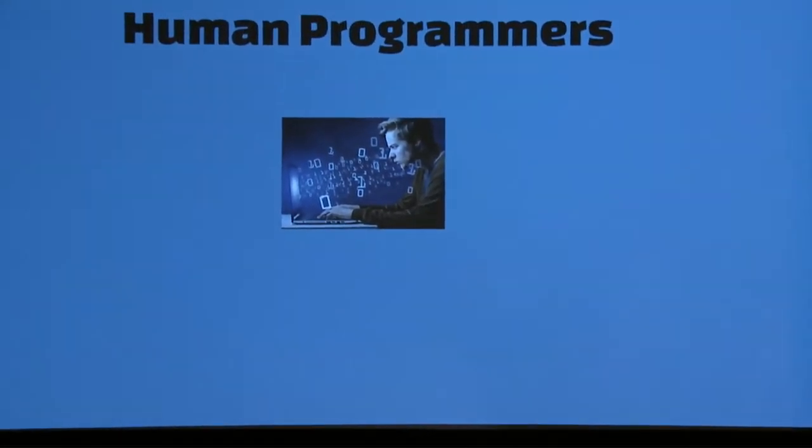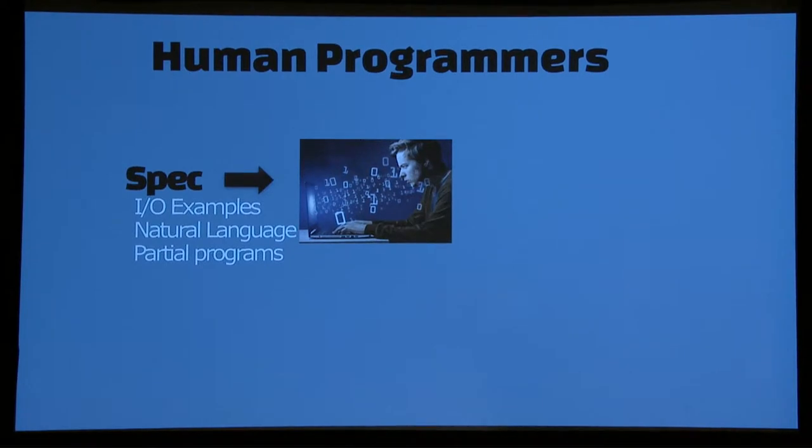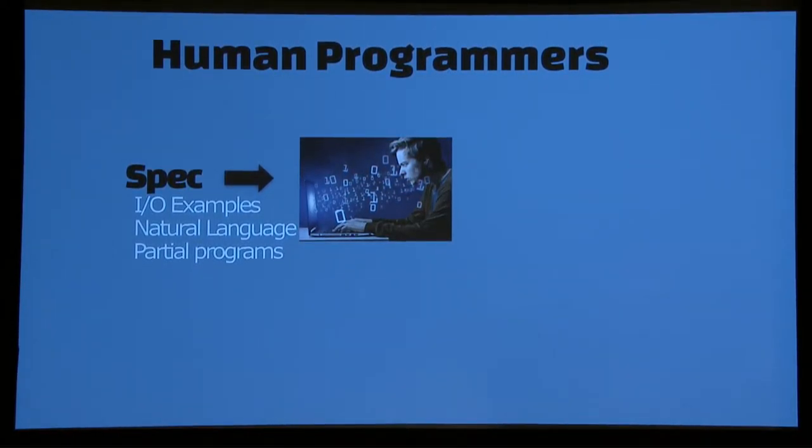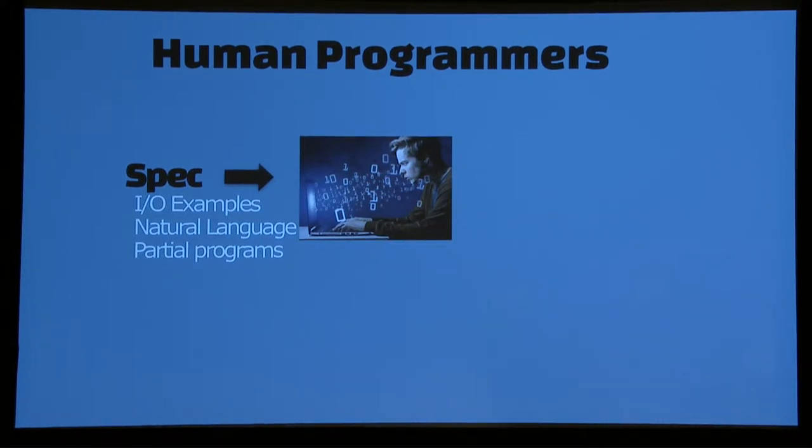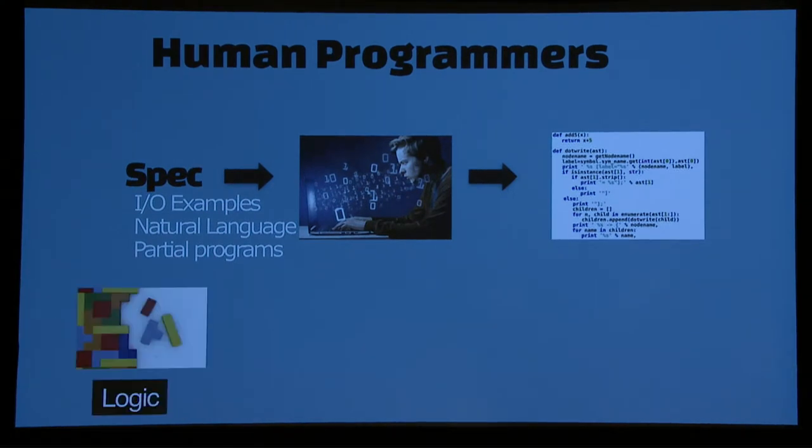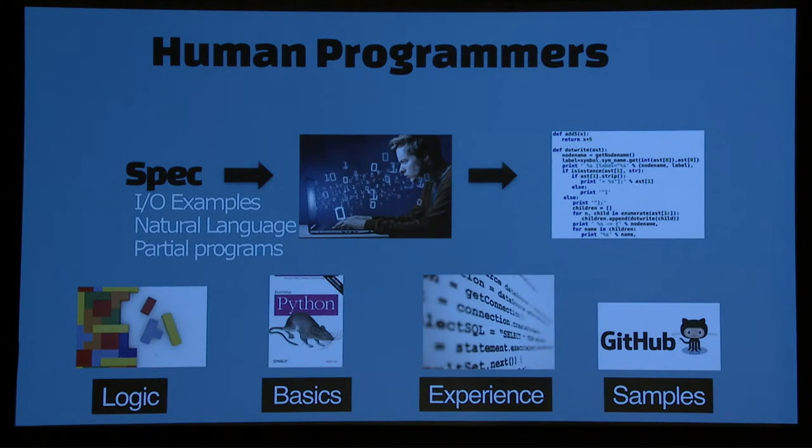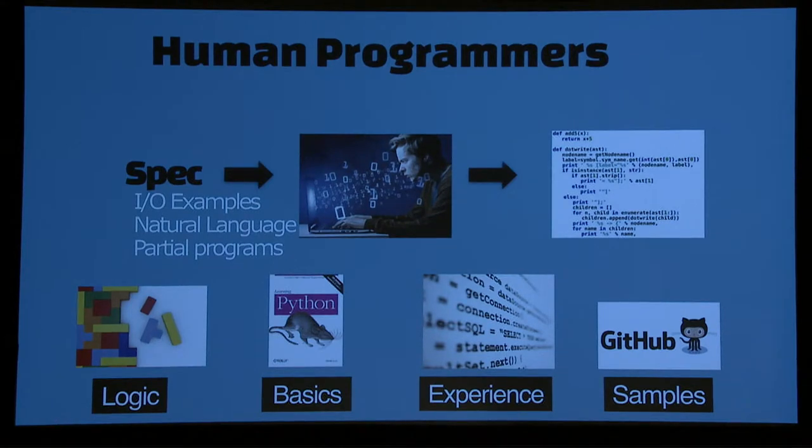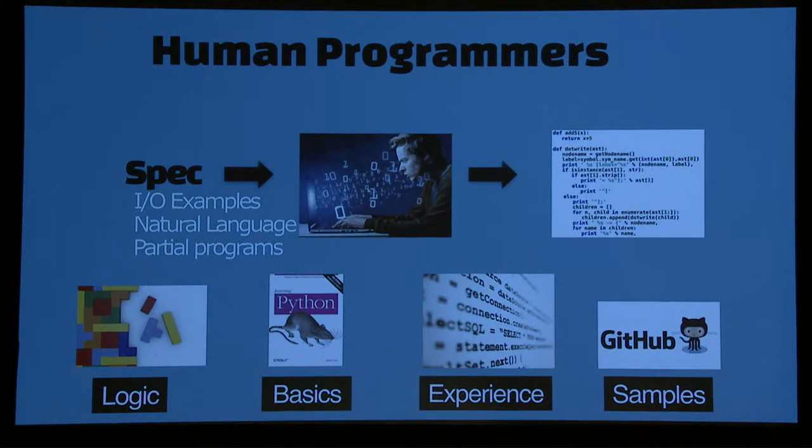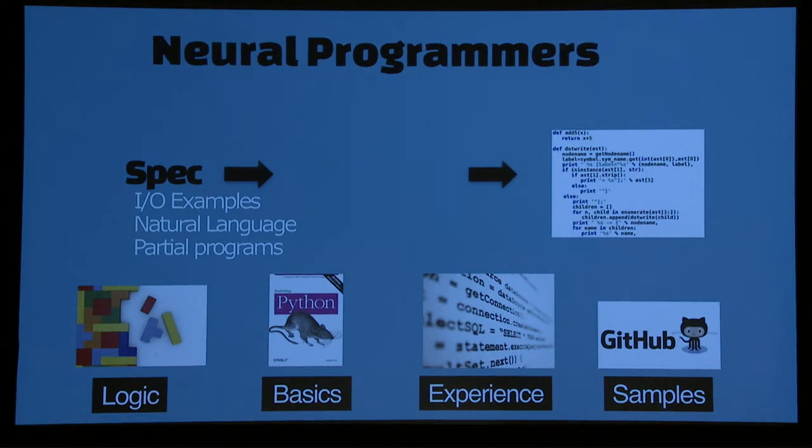If we take a step back and think about how humans are able to write programs, it's actually quite interesting. They can take a specification in many forms - they could have input-output examples, test cases, natural language, partial programs - and write programs. The way they do it typically, these problems would require some kind of logic to solve. But it's not the case that all programmers are great from the beginning. They take programming courses, start from basics, but then over time with experience they keep on getting better. Nowadays also, a lot of code comes from outside. Humans actually use various kinds of resources to do these kinds of programmatic tasks. The goal was, what would it take to build a system that can do similar things while utilizing these kinds of resources.